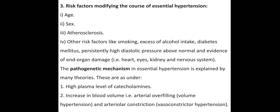Evidence of end organ damage is also a significant risk factor. Organ damage includes the heart, eyes, kidneys, and nervous system. Pathogenic mechanisms of primary hypertension include high plasma levels of catecholamines, which the body produces. This leads to an increase in blood volume where arteries become overfilled — this is volume hypertension. There is also the possibility of vasoconstricted hypertension due to arterial overconstriction.